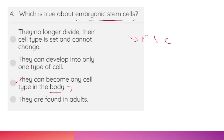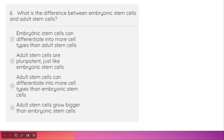For adult stem cells, they can develop into only one specific kind of cell. What is the difference between embryonic stem cells and adult stem cells? The correct option is: embryonic stem cells can differentiate into more cell types than adult stem cells — specifically, embryonic stem cells can divide into more than 200 cell types.